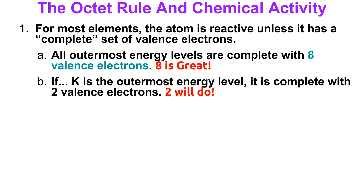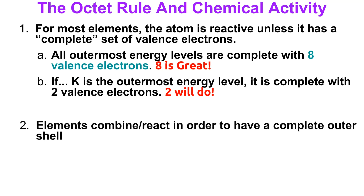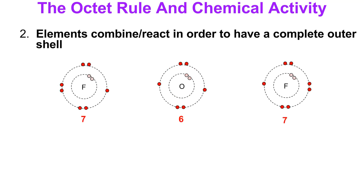If elements don't have a complete outer energy level, they will combine and react in order to achieve a complete outer shell. For example, here I have three elements: fluorine with seven valence electrons, oxygen with six valence electrons, and another fluorine with seven valence electrons. None of them have a complete outer shell, so all of them want to react. When they do react, they create a compound.